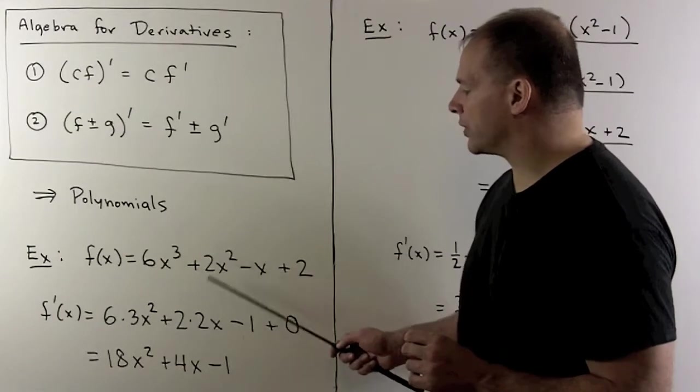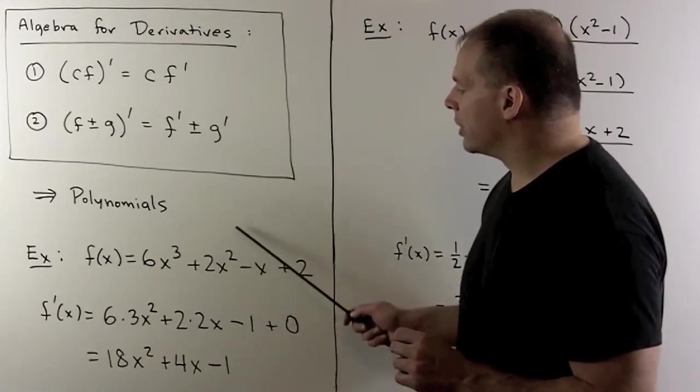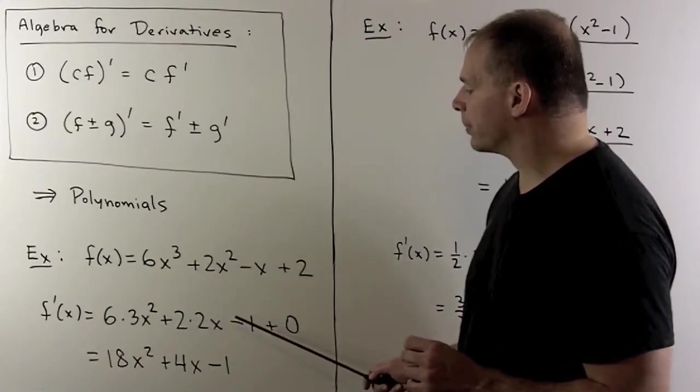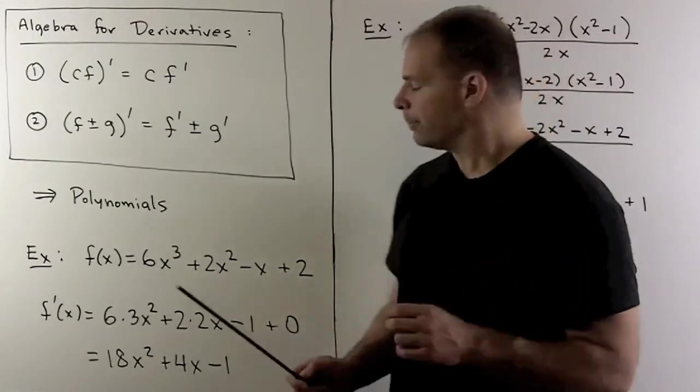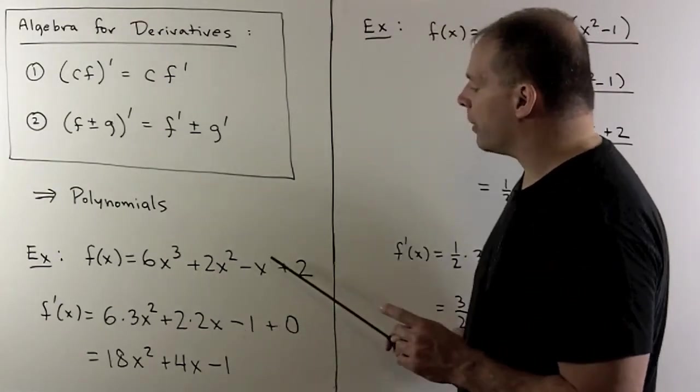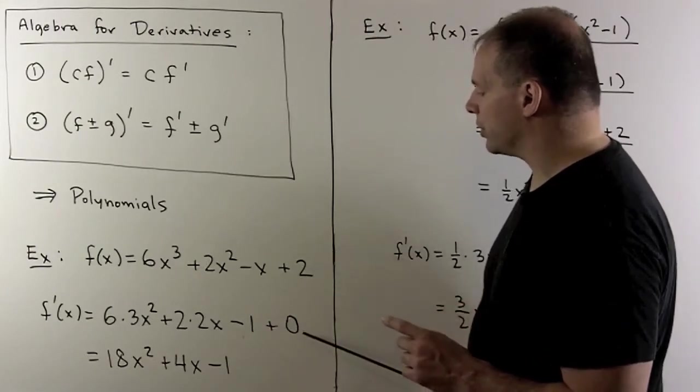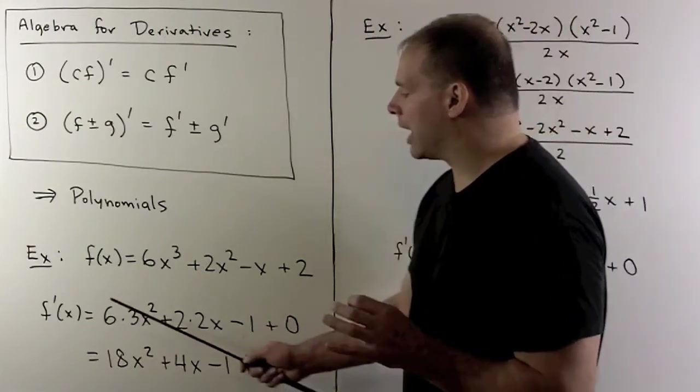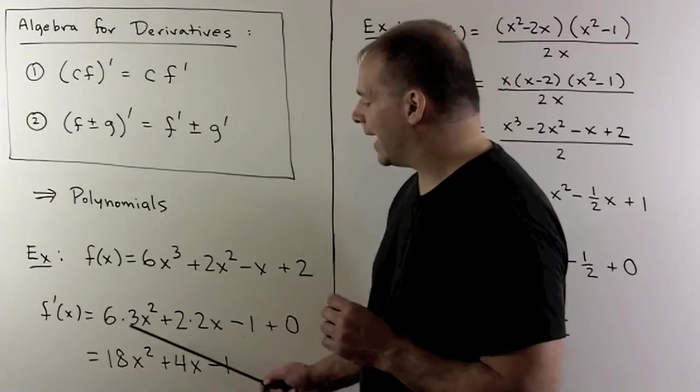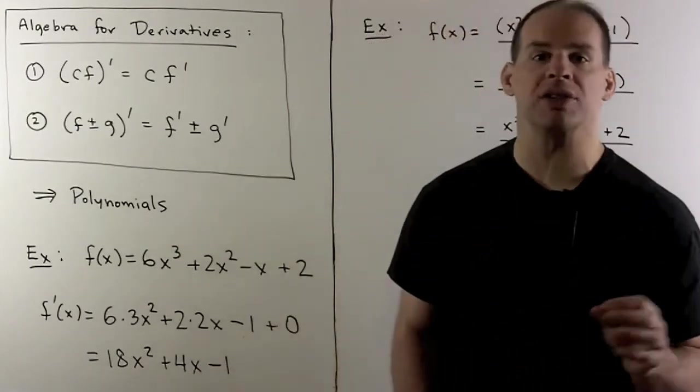For the 2x squared, we set the 2 aside. Derivative of x squared is 2x. Then, for minus x, just recall, we turn the x into a 1, and then constants go to 0. So we collect everything. We get for the derivative, 18x squared plus 4x minus 1.